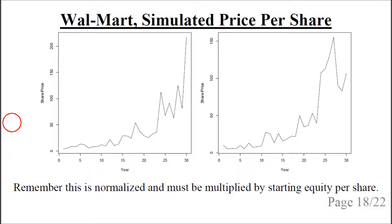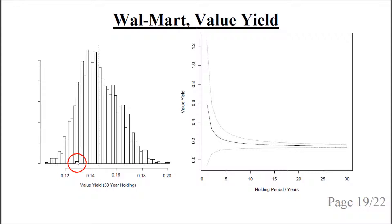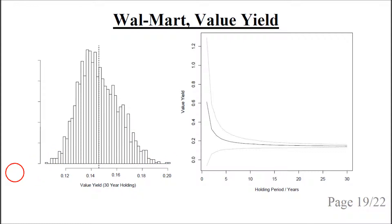The pricing model is just the simulated equity multiplied by a random sample of the historical price-to-book ratio. The plot on the left shows the histogram of the value yield of Walmart when shares are held for 30 years. The mean is about 14.5% and most value yields range between 12% and 18%, with the tails going out a bit. The value yield is the annualized rate of return from buying shares at the current share price, holding them for 30 years, and is calculated from the dividends paid out annually and the selling share price relative to the current share price.